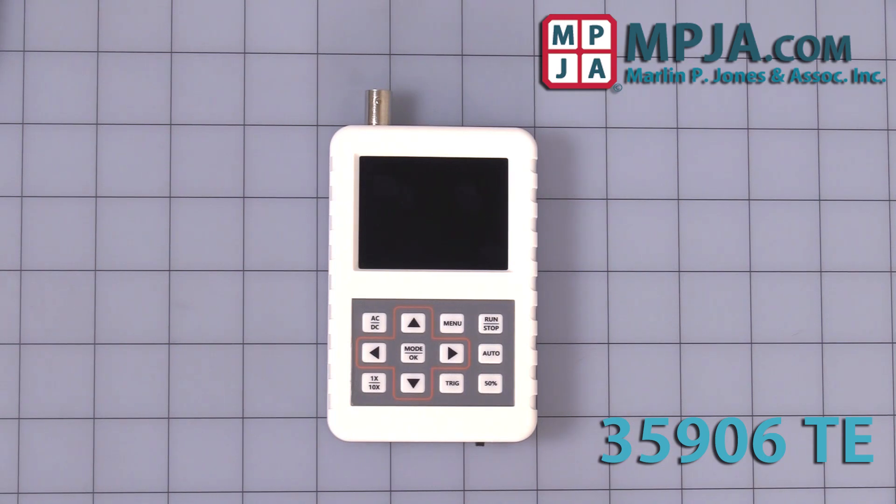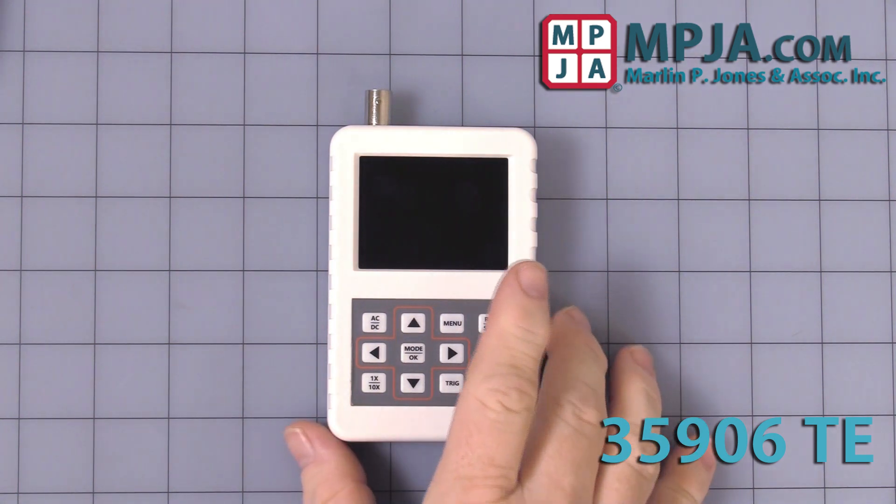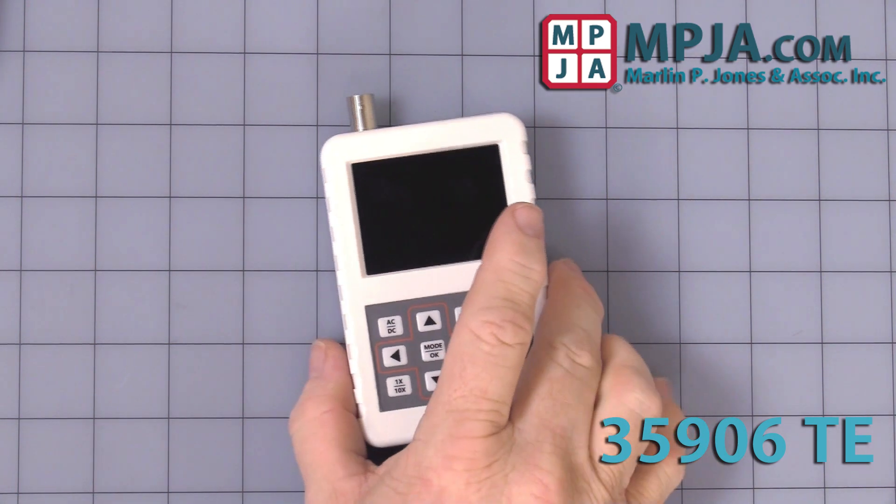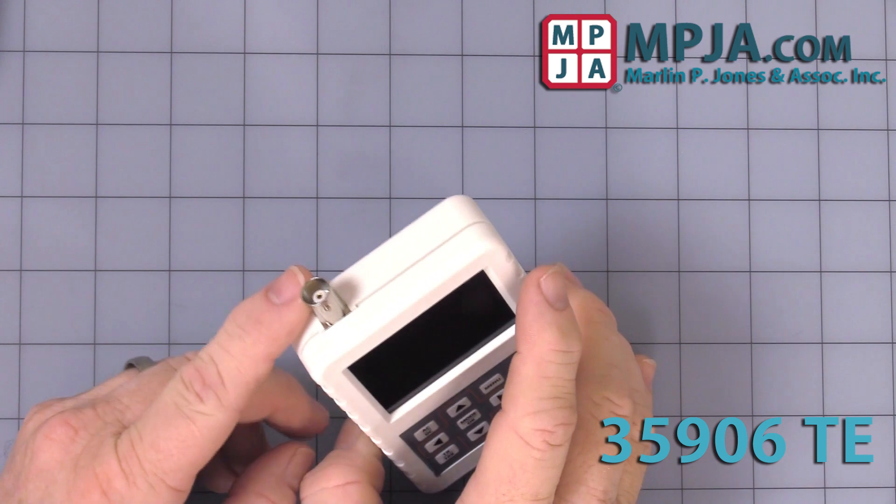Hello, today's video is on stock number 359060E, the 5MHz handheld mini scope, single channel through the BNC at the top here.